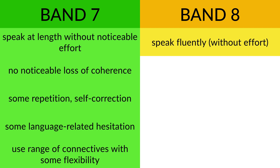Let's recap how to get band 7 or above. First, don't use too many connectives — you need a balance between helping your listener follow your speaking and overusing them. If you use too many connectives you're only going to get band 5. You also need to extend your answers and stretch, even if it's a bit of an effort. Band 5 candidates often don't want to say too much, but to get band 7 or above you need to extend your answers — particularly in part 3.